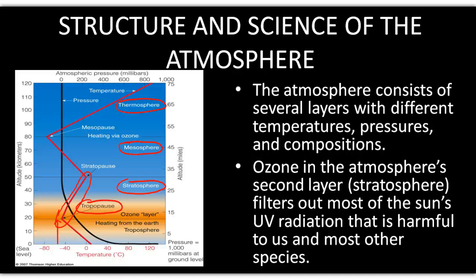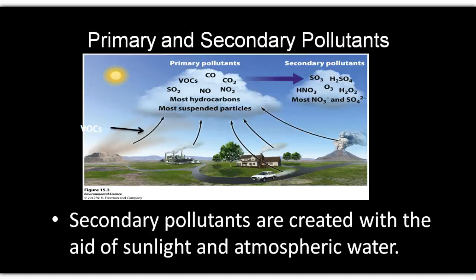There are primary pollutants and secondary pollutants. Through one change or another, primary pollutants are transformed into secondary pollutants. A common transformation is mixing with water — for example, nitrogen oxide and nitrogen dioxide mix with water to form acids, and the same thing happens with sulfate particles.